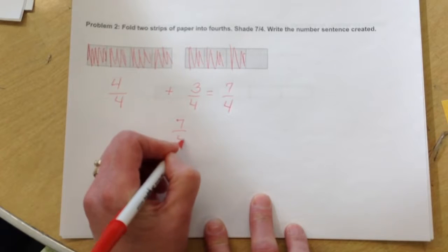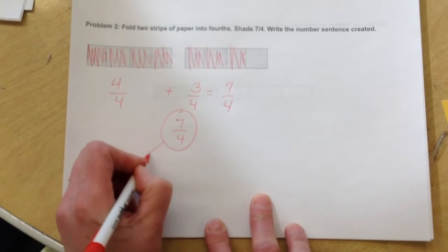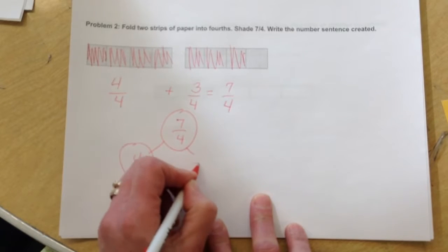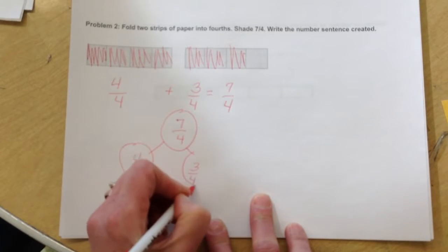If we decomposed seven-fourths, we would see we have four-fourths and we have three-fourths.